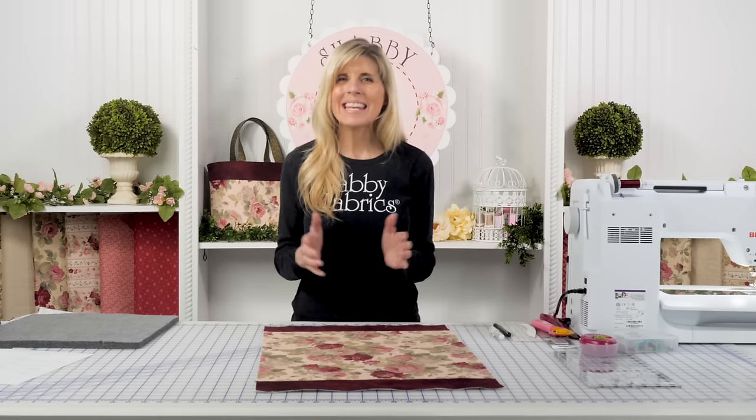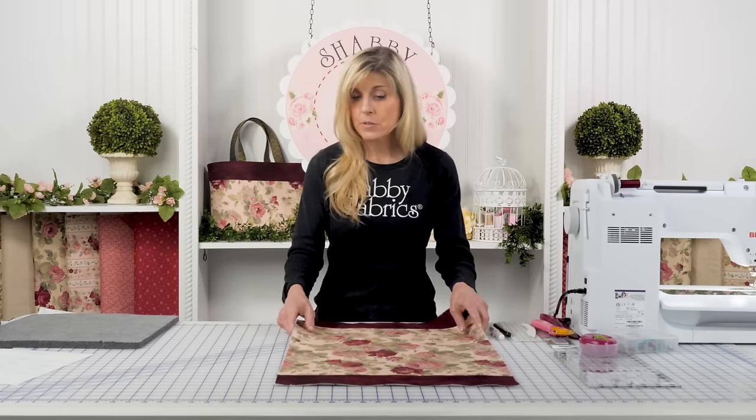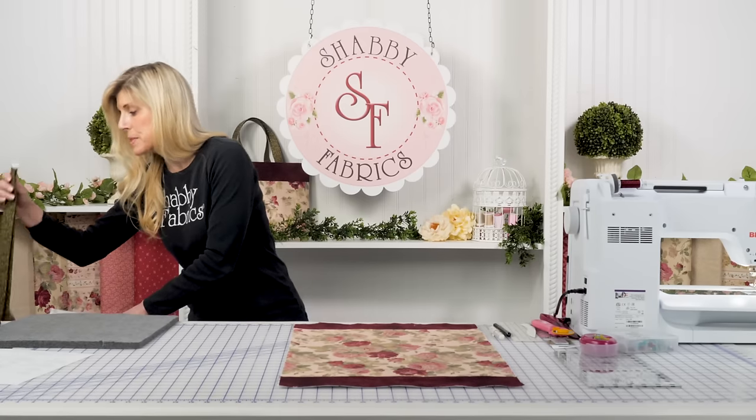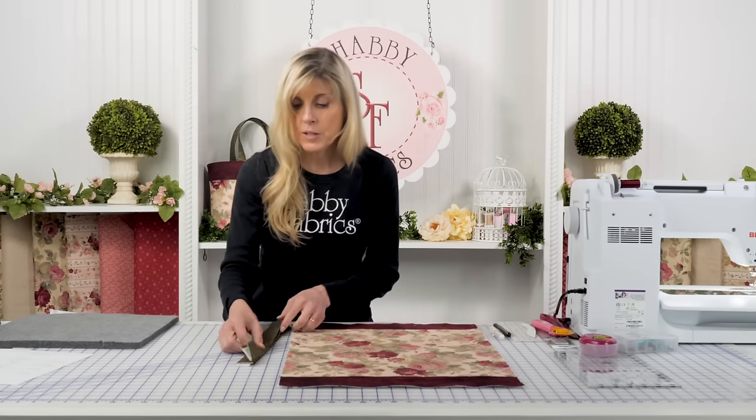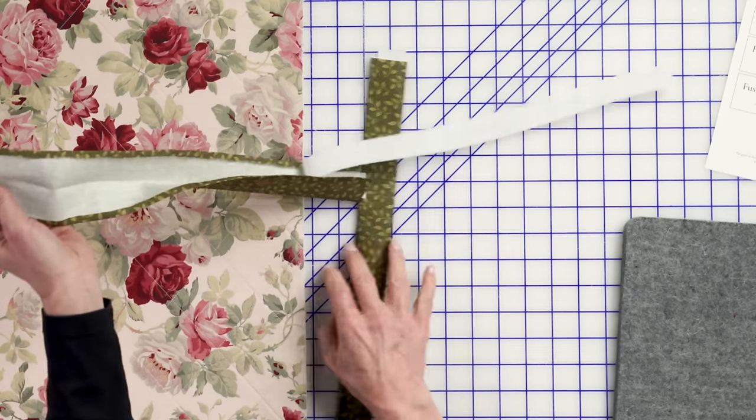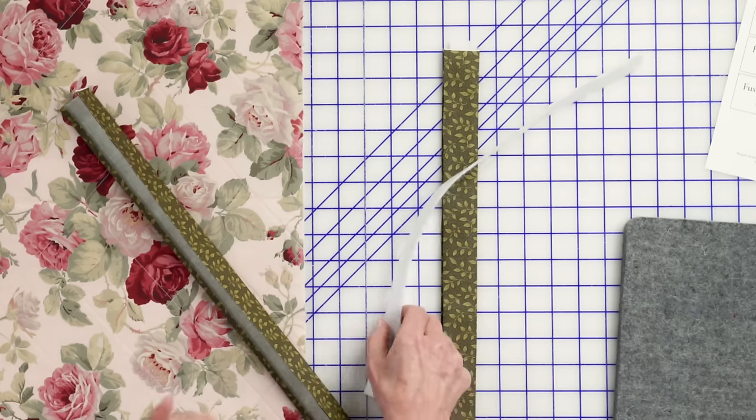Whatever that is, go ahead and get that quilted. The next step will be our handles, so let's go ahead and bring those out. And that's what those strips of the fusible fleece were for, those one inch. So once we have our fabric, just like this, that's why we're using our hot ruler.